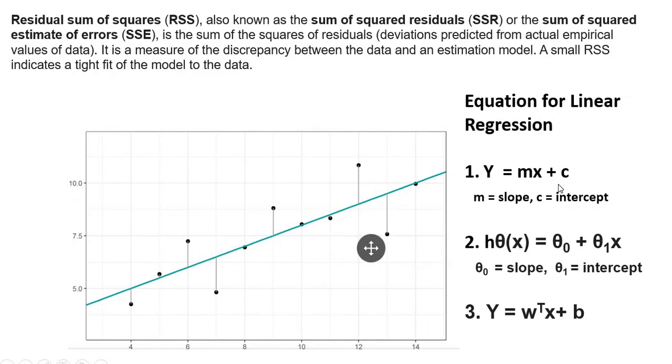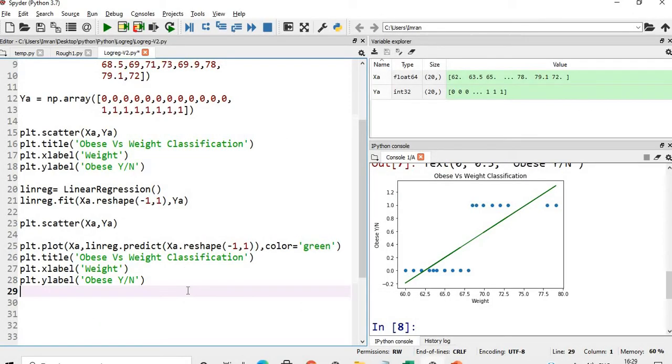The best fit line equation has various forms: Y equals mx plus c, h theta x equals theta 0 plus theta 1 x, and Y equals w transpose x plus b. Here m is slope, c is intercept, theta 0 is slope, theta 1 is intercept, and w transpose is the matrix of weights.